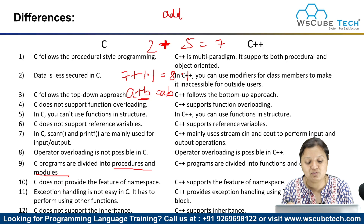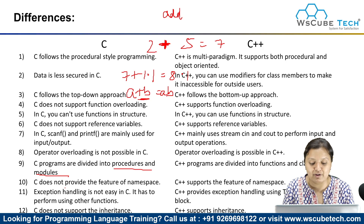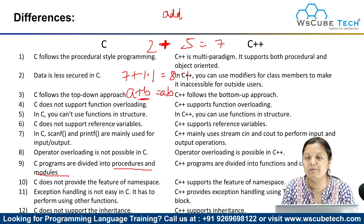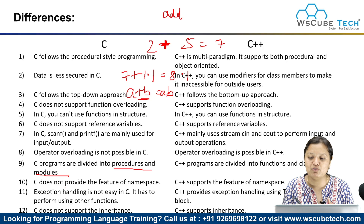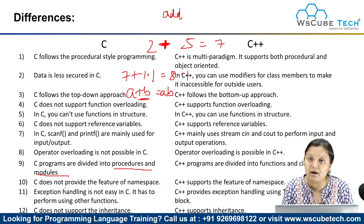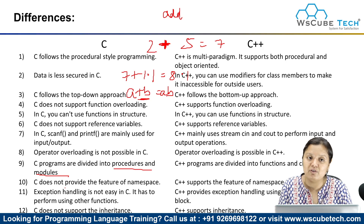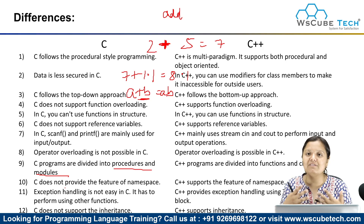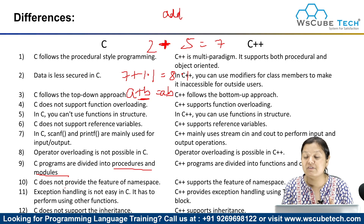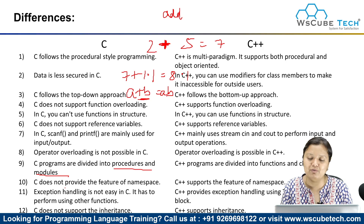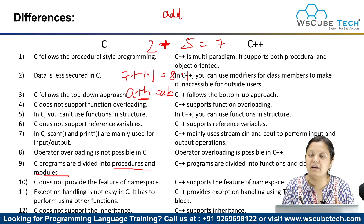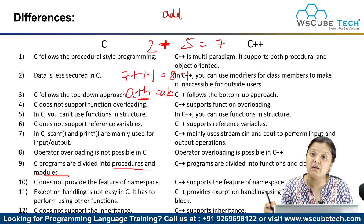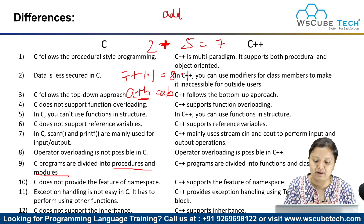Exception handling is not easy in C — it has to be performed using another function. Exception handling forms a very important part in every programming language, because during execution of a program we are bound to make some errors, and those exceptions need to be handled carefully. In C, it is a little difficult to handle this. But in C++, we have a try-catch module available which helps us easily handle exceptions.